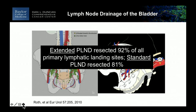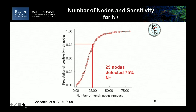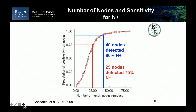From our consortia study, we asked the question about sensitivity for detecting lymph node metastasis. On the x-axis is the number of lymph nodes removed; on the y-axis is the probability of identifying positive lymph nodes. With 25 nodes, we detected 75% of lymph node metastases. With 40 lymph nodes, we detected 90%. So the extent of node dissection and the quality of pathologic analysis both matter. Bernie Bochner showed that presenting material in packets rather than en bloc leads the pathologist to identify more lymph nodes.